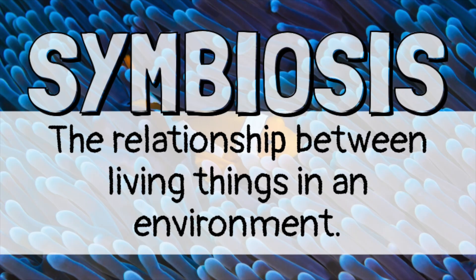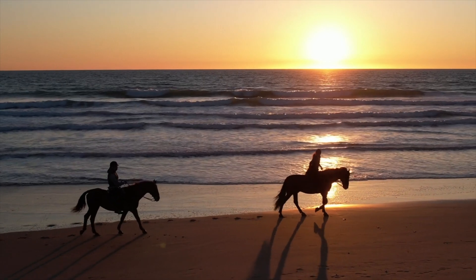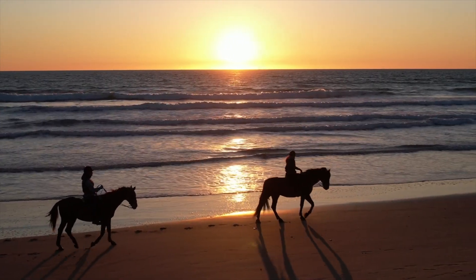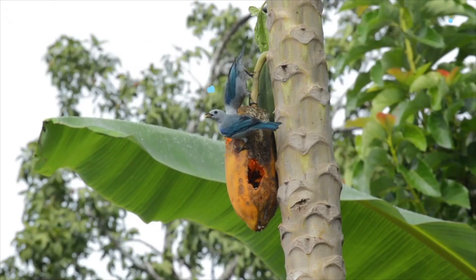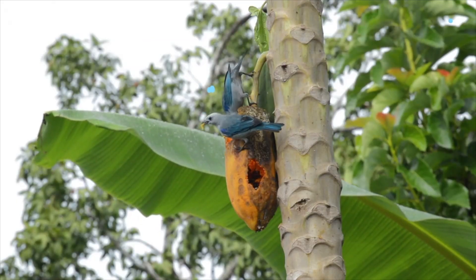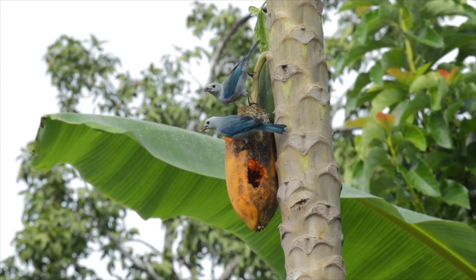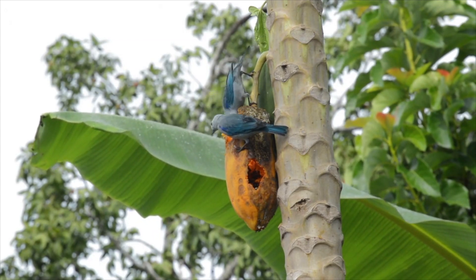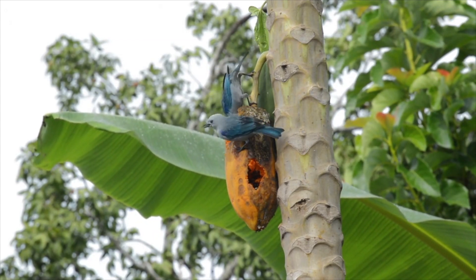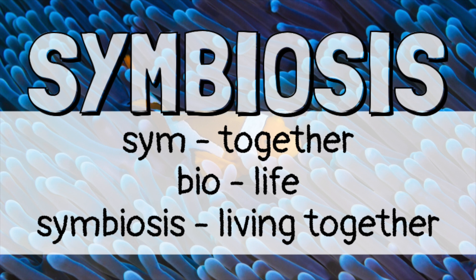Symbiosis is the relationship between living things in an environment. Sometimes living things need one another to survive. When this happens, the living things, whether they're plants or animals, have a symbiotic relationship. 'Sym' means together, and 'bio' means life. So, symbiosis means living together.